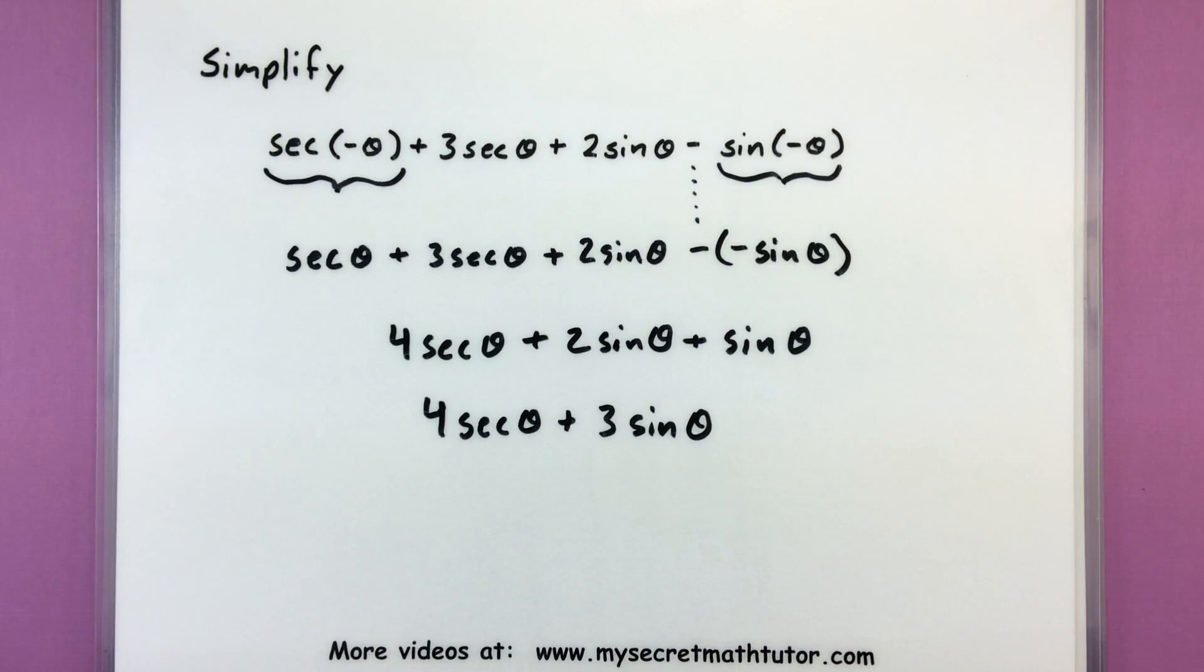All right, so you can see these negative angle identities give you a lot of options if you do happen to have a negative angle on the inside. They essentially give you a way so that you can write it so you have a positive angle on the inside. All right, if you'd like to see some more videos, please visit MySecretMathTutor.com.